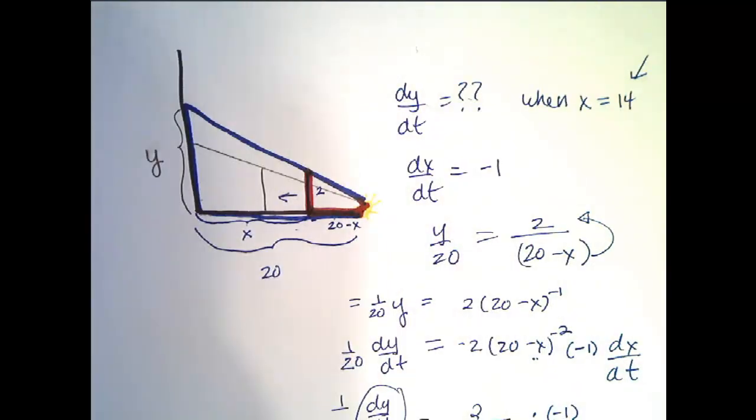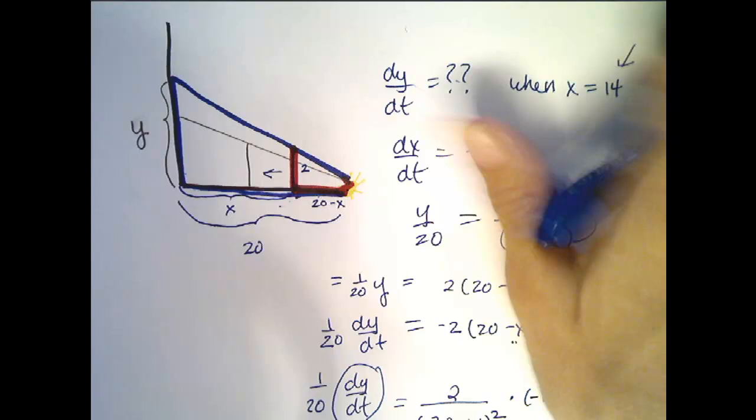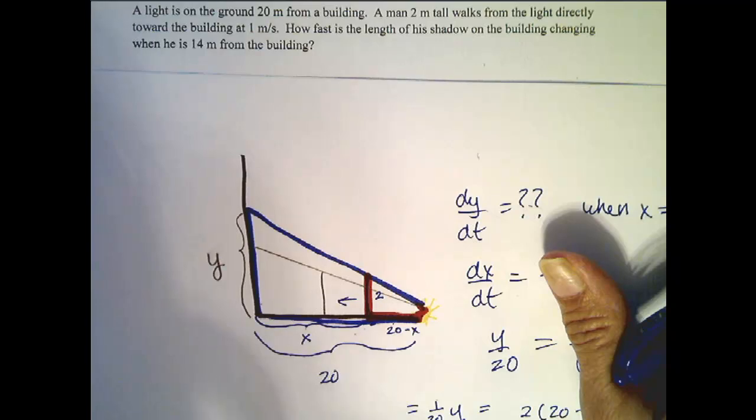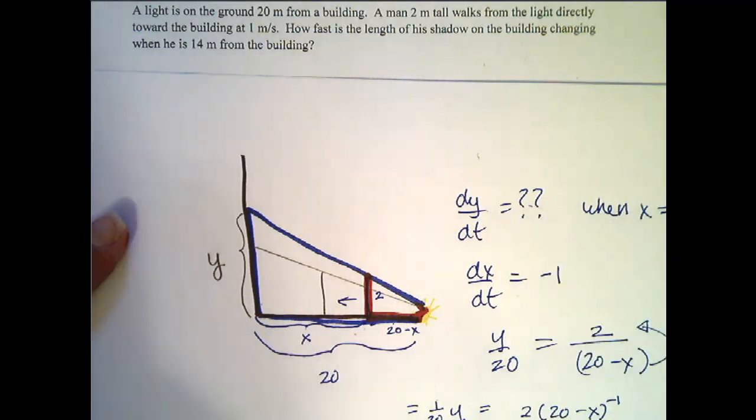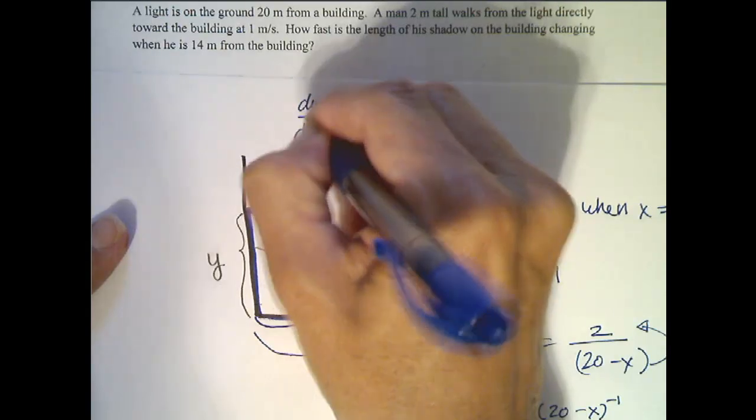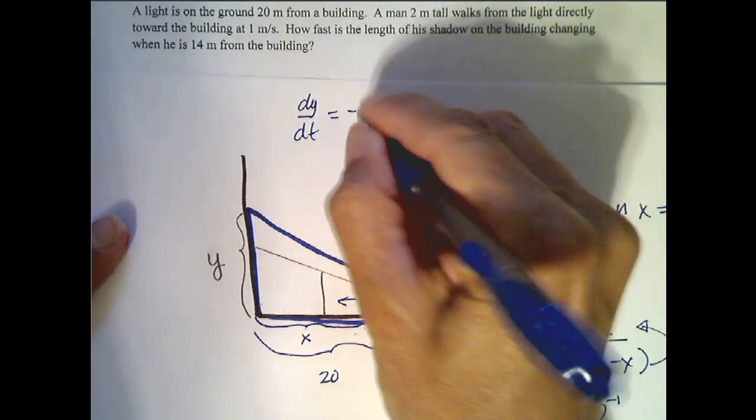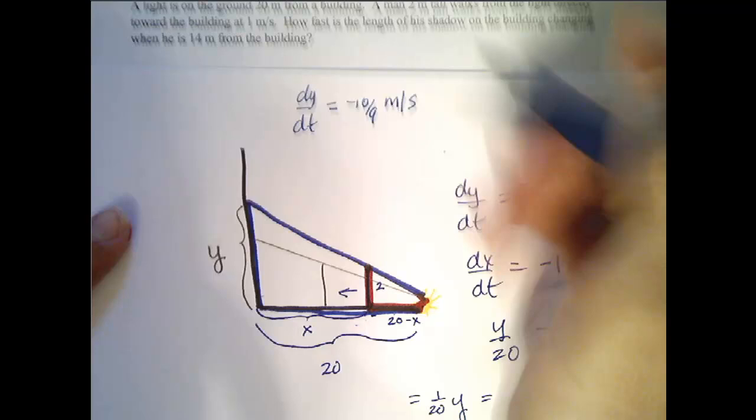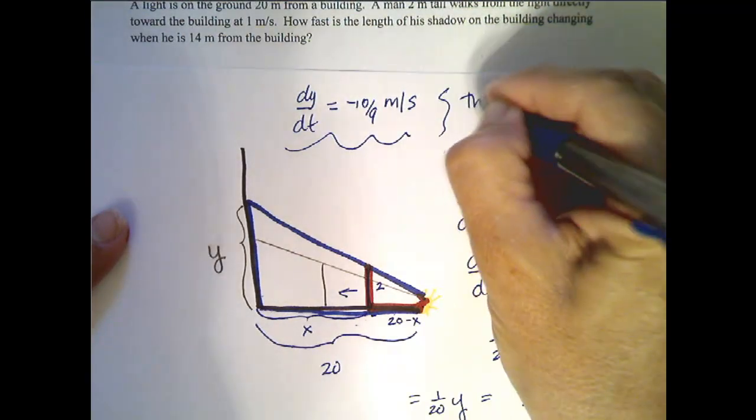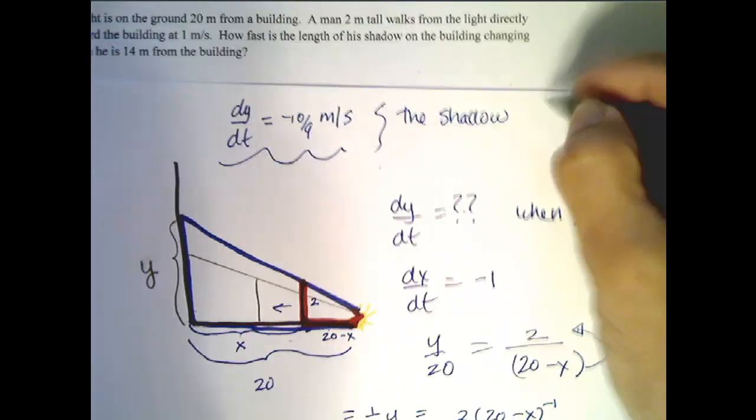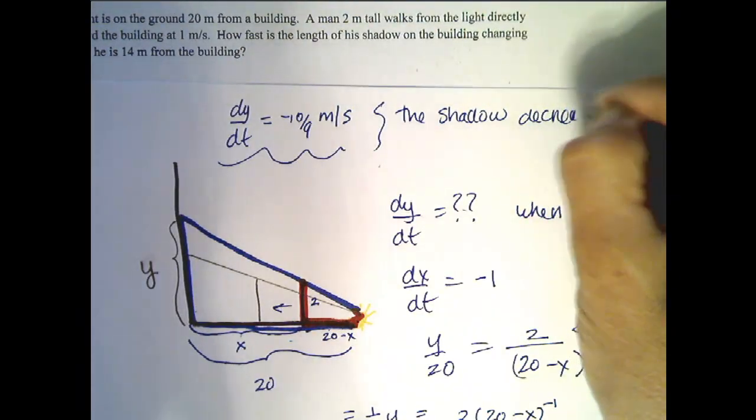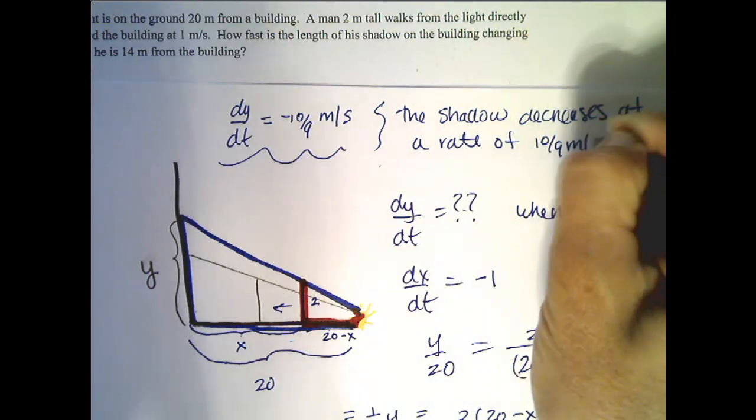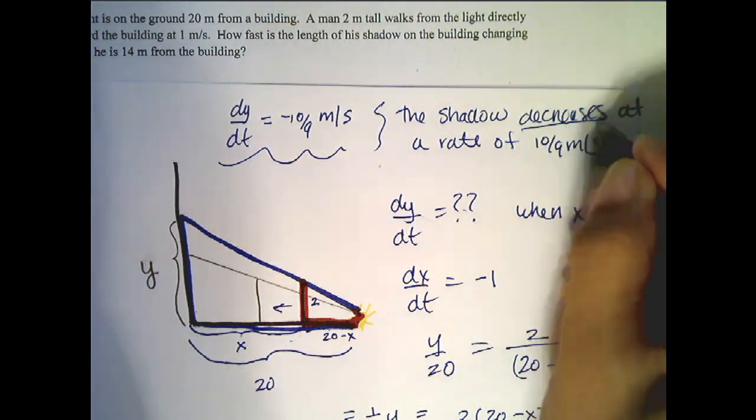So let's make sure we answer the question. How fast is the length of his shadow on the building changing when he is 14 meters from the building? And so my answer is dy/dt equals negative 10 ninths, and what was my units? Meters per second. Another way you could say the same answer is the shadow decreases at a rate of 10 ninths meters per second. Notice I don't include the negative here because I've included that meaning here.